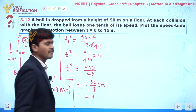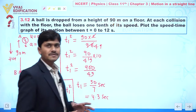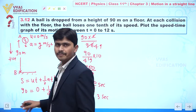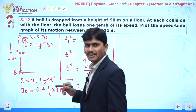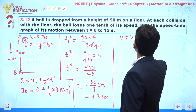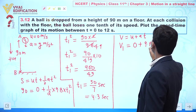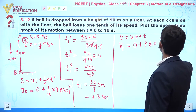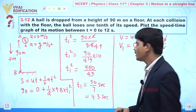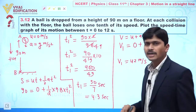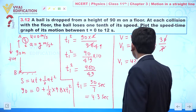Dividing 30 by 7, we get approximately 4.3 seconds. So the total time taken by the body from A to B is 4.3 seconds or 30 by 7 seconds. Now we find the velocity with which the ball strikes the ground using v equal to u plus at: v1 equals 0 plus 9.8 multiplied by 30 by 7, giving v1 equal to 42 meters per second.